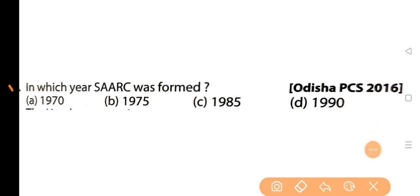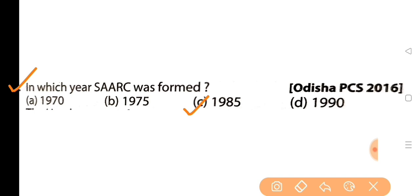Next question: in which year was SAARC formed? Koon sanat SAARC gothan kora hoisil? The answer is option C: 1985. SAARC was formed on 8 December 1985 in Dhaka, Bangladesh. SAARC's headquarters is in Kathmandu, Nepal.